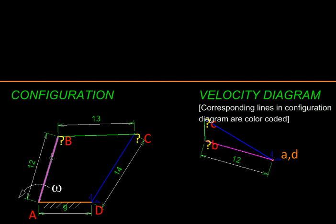Similarly, we have drawn a line perpendicular to this green line and a blue line in the velocity diagram perpendicular to this blue link. So the velocity diagram is complete.